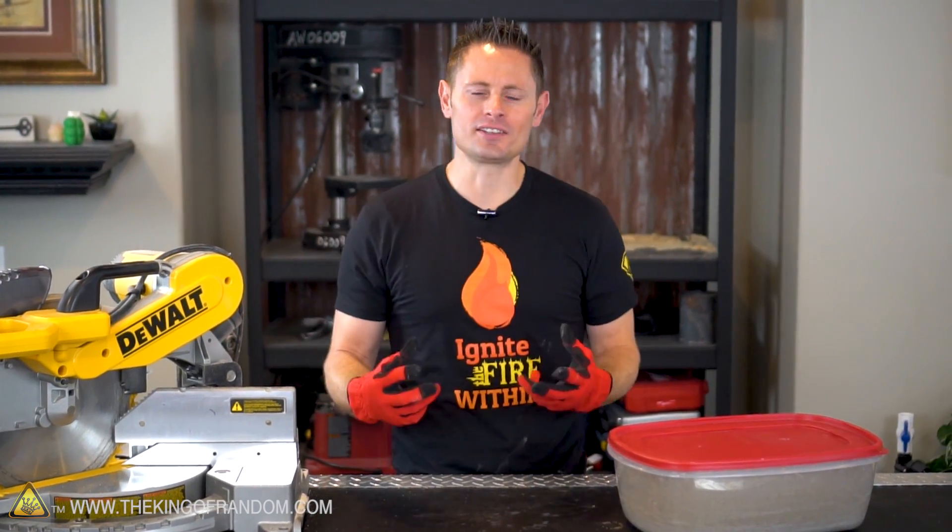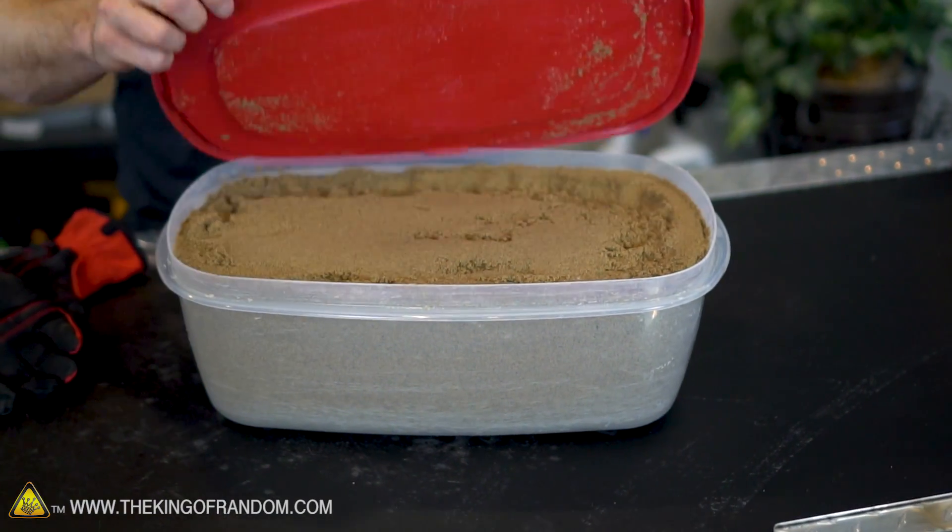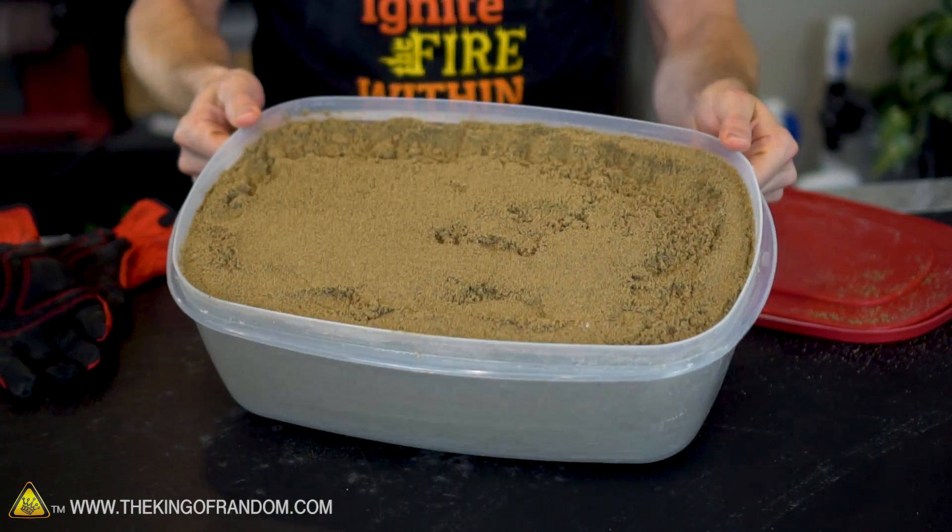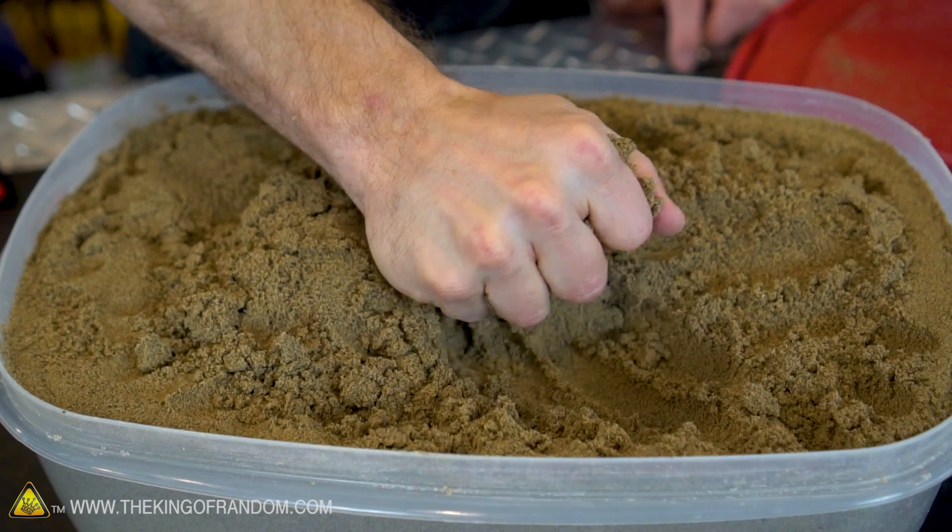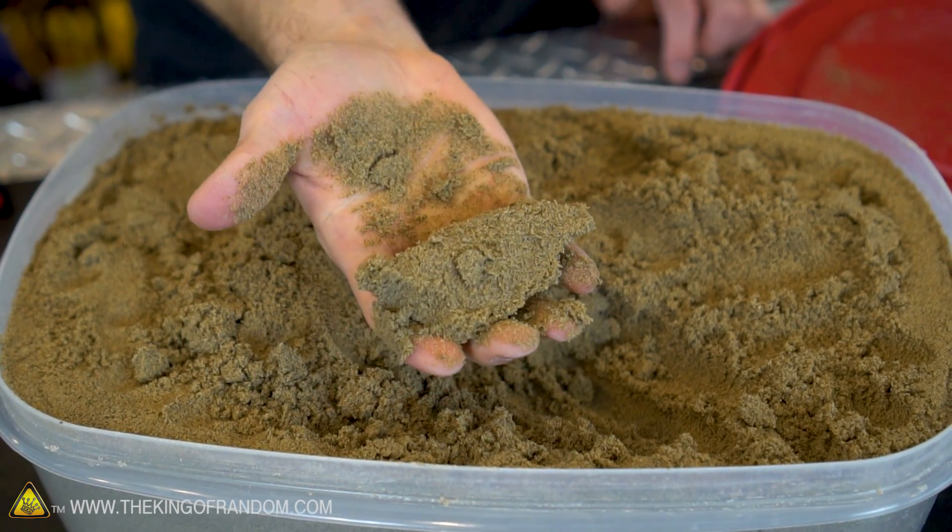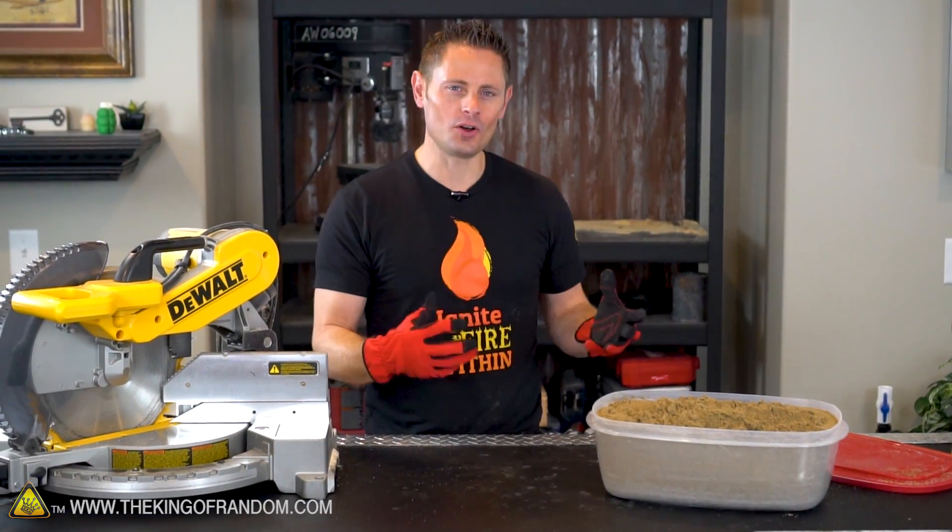In yesterday's video we tried making something called green sand, which is basically play sand that you can use for casting metals, and I went ahead and mixed up a whole bunch more. So now we've got about 25 pounds of green sand just ready to be used.